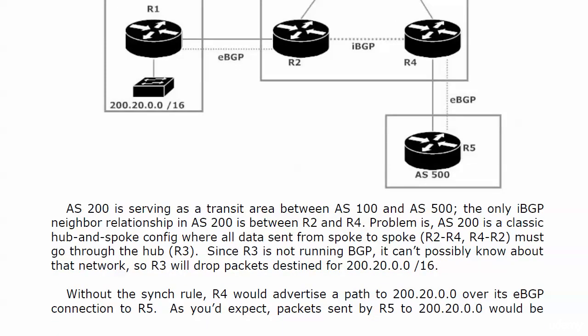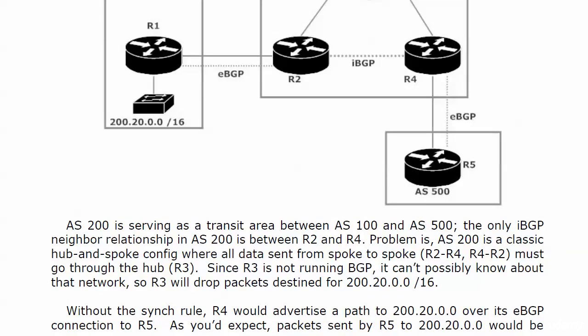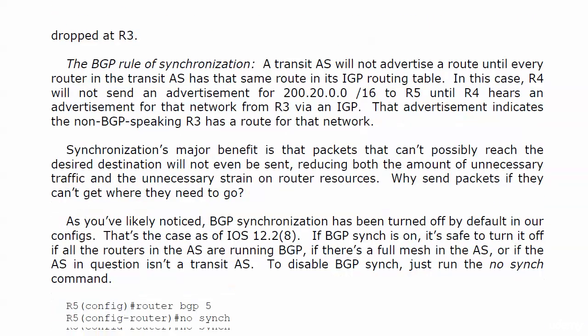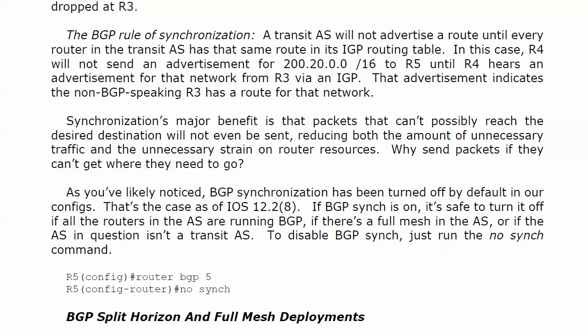Without the synchronization rule, router 4 would advertise a path to 220.0.0.0 over its eBGP connection to router 5. And as you'd expect, packets sent by router 5 to that network are never going to get there. The BGP rule of synchronization states: a transit AS will not advertise a route until every router in the transit AS has that same route in its IGP routing table. So R4 would not send an advertisement for 220.0.0.0/16 to router 5 until router 4 heard an advertisement for that network from R3 via an IGP, indicating the non-BGP speaking R3 has a route for that network.